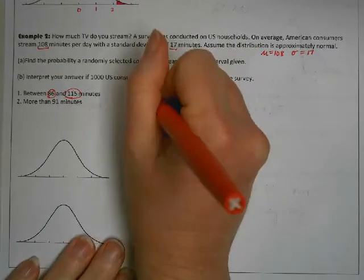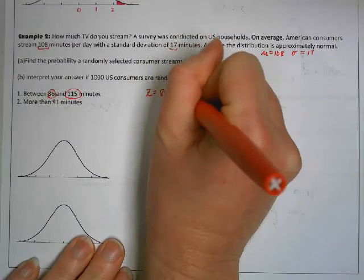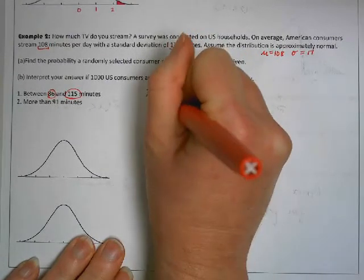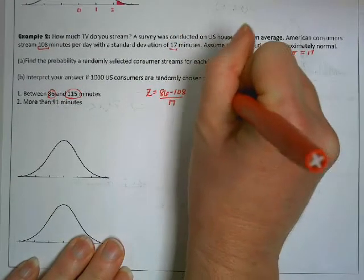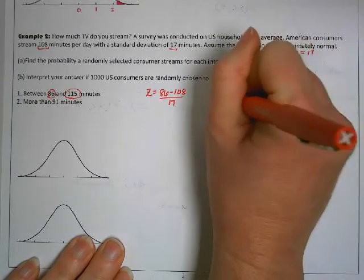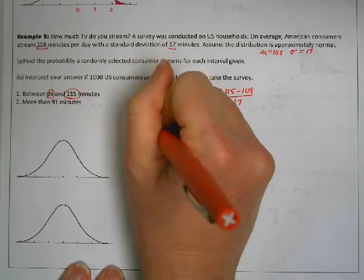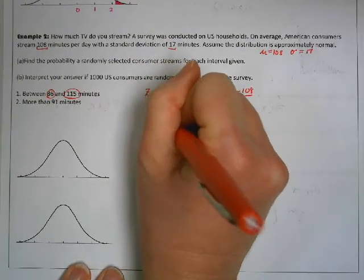So I'm going to do Z equals 86 minus 108 divided by 17, and Z equals 115 minus 108 divided by 17.